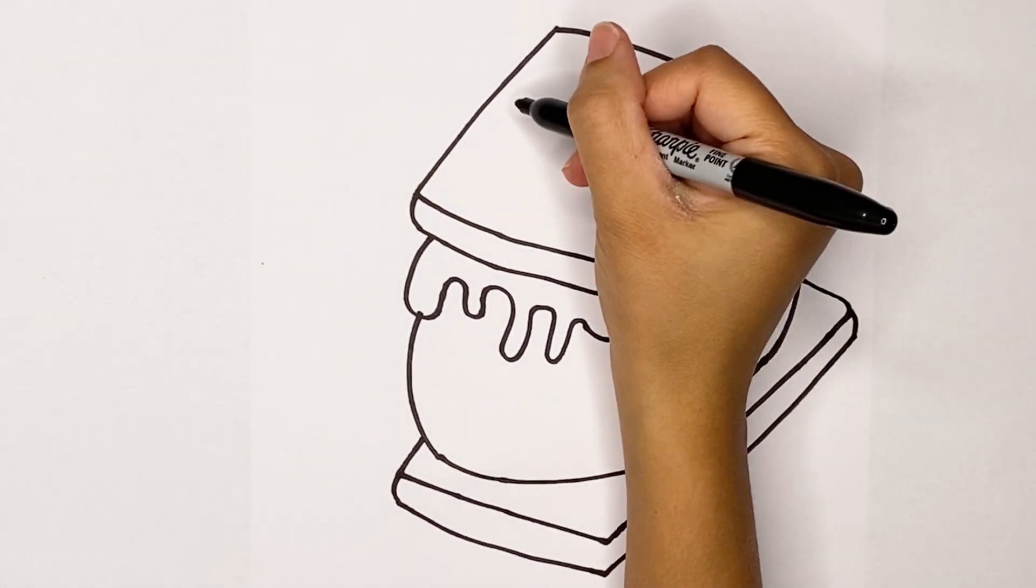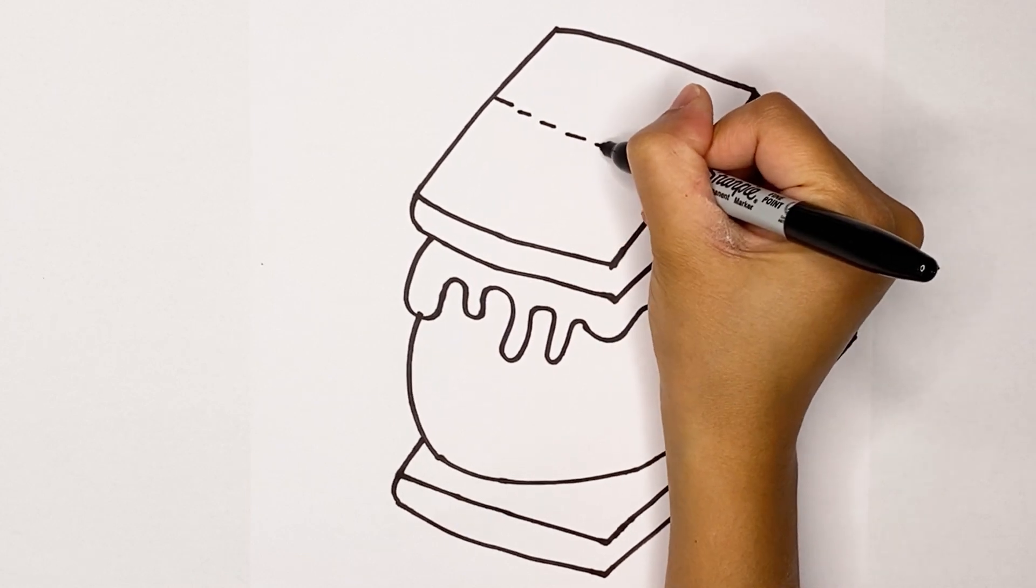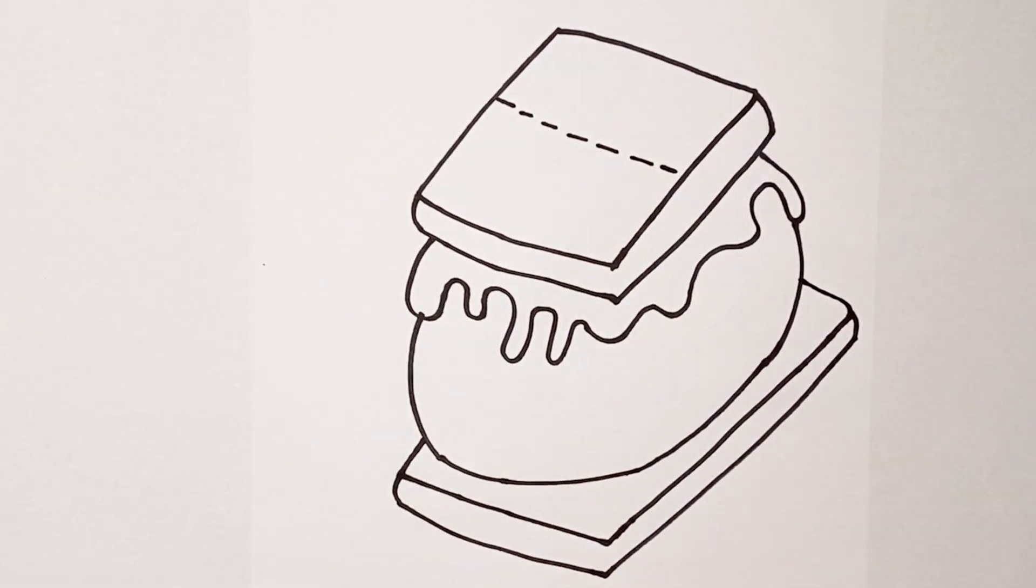Now I'm going to make lines in the middle. You know how graham crackers have those lines that go down the middle so you could split it. There we go.